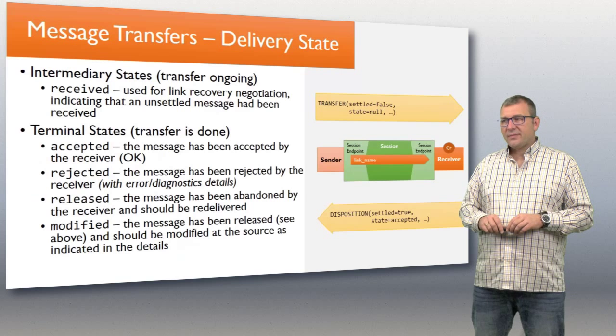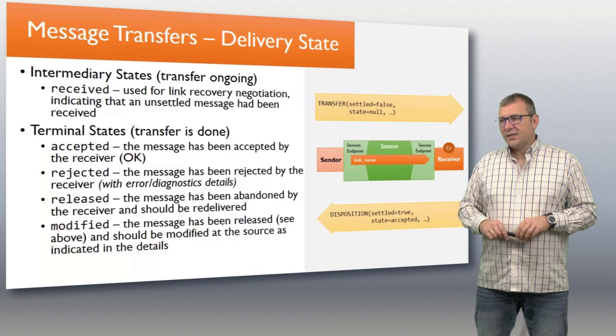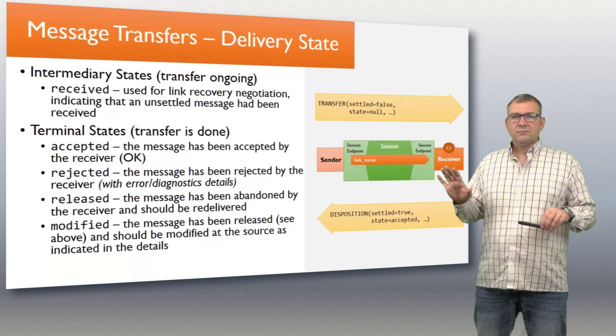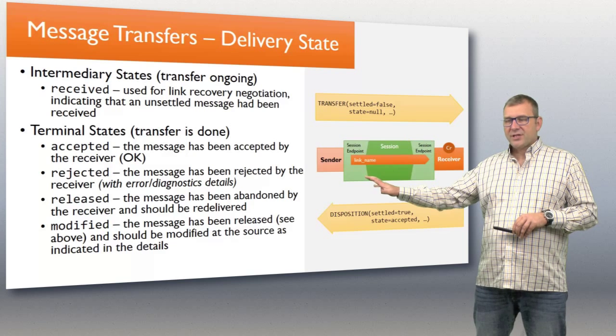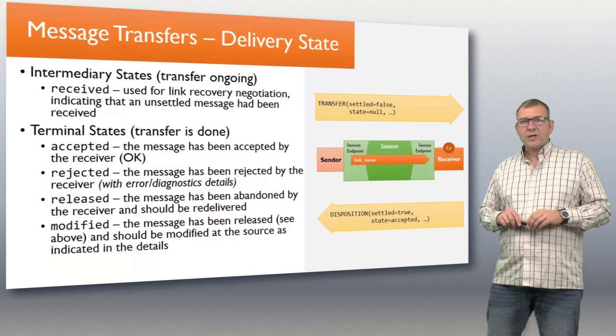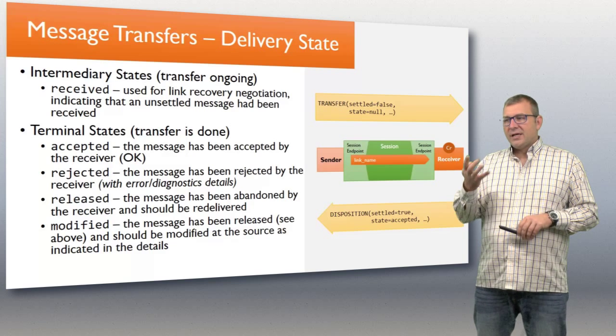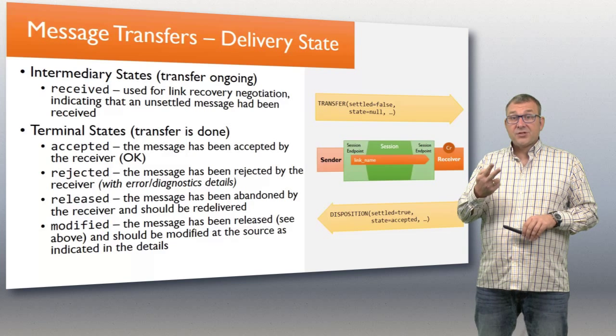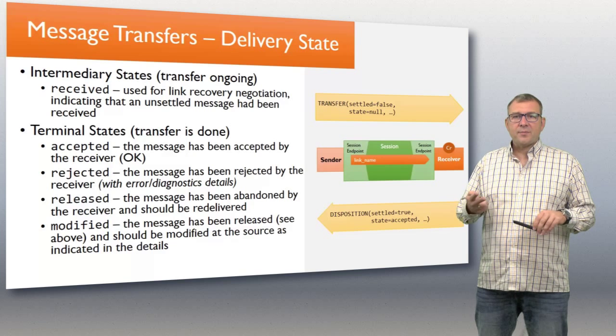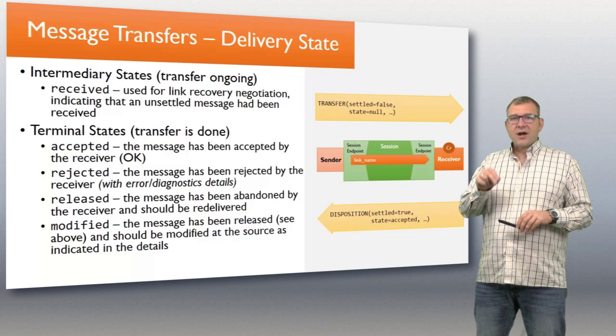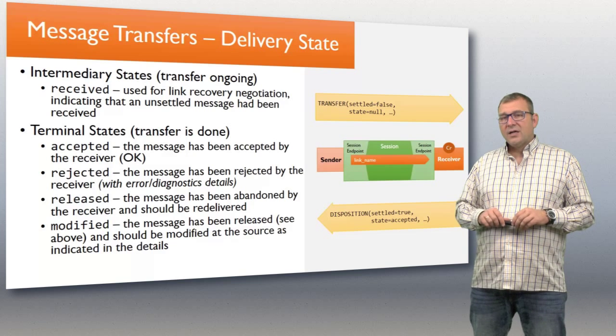Those message transfers result in a particular delivery state. You transfer the message using a transfer frame, say it's not settled, and have an initial state of null, which means there's no outcome yet. The receiver receives it, and if there's a requirement for settlement, will process that message and answer with a disposition frame. The disposition frame has four options: accepted, everything is okay; rejected, something happened, the inbound message was bad or the receiver could not deal with that message. It could not store it. There was an error, so error information is included in the rejected response in that disposition frame.